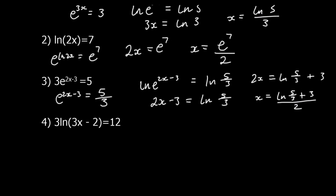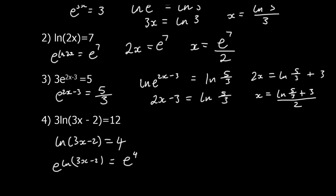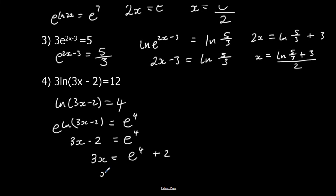Finally: 3 ln(3x) - 2 = 12. We divide by 3 first: ln(3x) - 2 = 4. Then we apply e to both sides: e^(ln(3x) - 2) = e^4. e ln cancels, so 3x - 2 = e^4. Add 2 to both sides: e^4 + 2 = 3x, then divide by 3: x = (e^4 + 2) / 3.